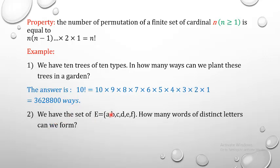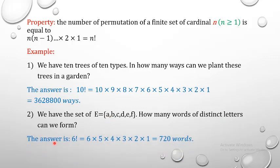Second example: we have a set E containing the elements a, b, c, d, e, and f. How many words of distinct letters can we form from this set? The answer, according to our rule, is n! = 6! = 6 × 5 × 4 × 3 × 2 × 1 = 720 words.